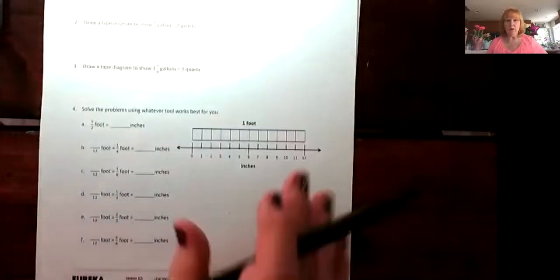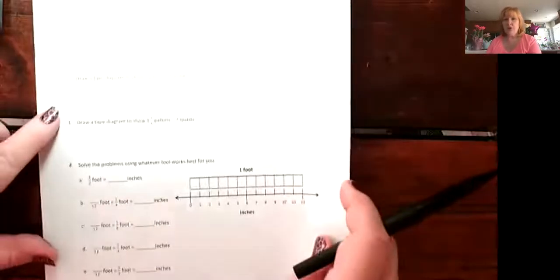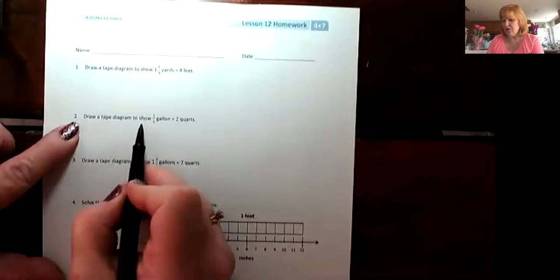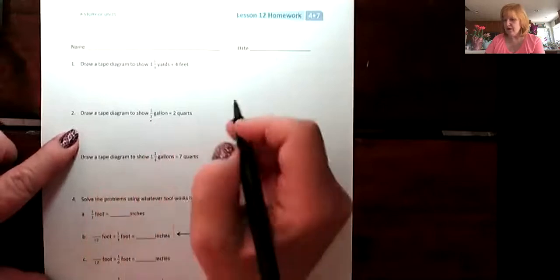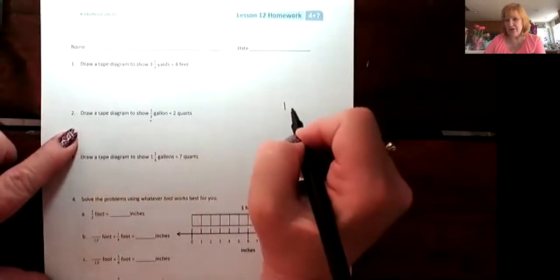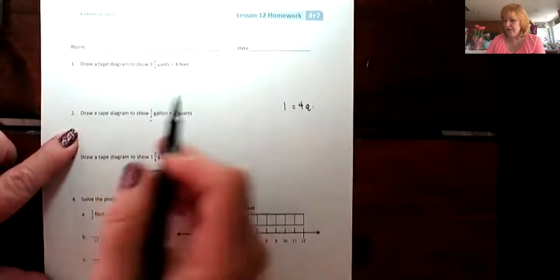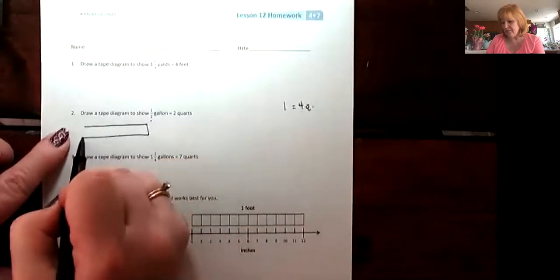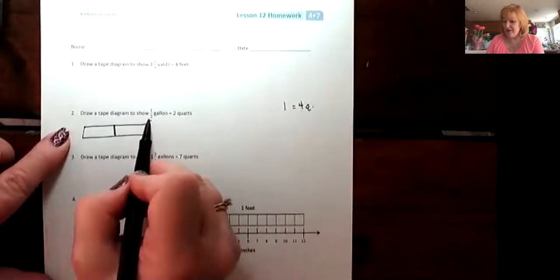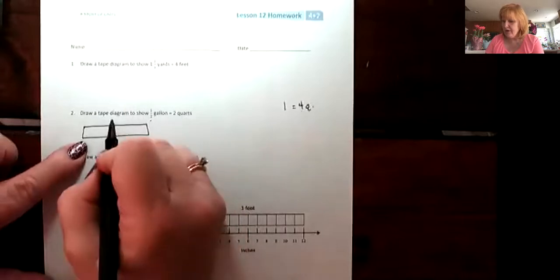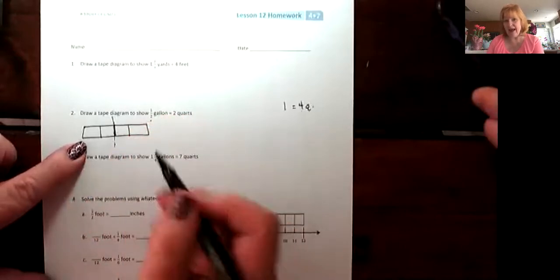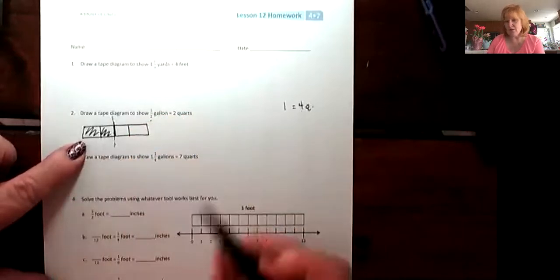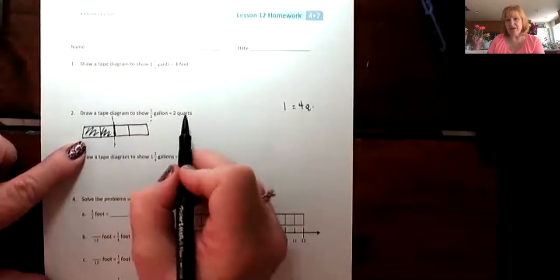So I'm going to be using the homework page, and you have your problem sets — it's going to look a little bit differently. Right here it says draw a tape diagram to show one half gallon is equivalent to two quarts. So I'm going to be starting from gallons to quarts, and I know that in one gallon there are four quarts. So here I've got one gallon, and half of it — it says a half gallon is equivalent to two quarts. A gallon is equivalent to four quarts, so if I divide it in half, I've got this one and this one. Here is my two quarts. A half gallon is equivalent to two quarts.